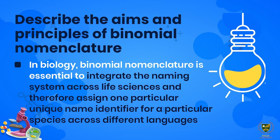Next statement: Describe the aims and principles of binomial nomenclature. Students, you are familiar with binomial nomenclature — it is a system according to which organisms are given scientific names. In biology, binomial nomenclature is essential to integrate the naming system across life sciences and assign one unique name identifier for a particular species across different languages, so that internationally one organism is identified by one specific name.